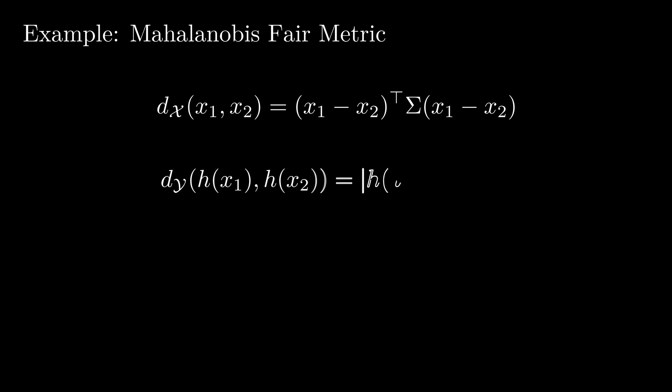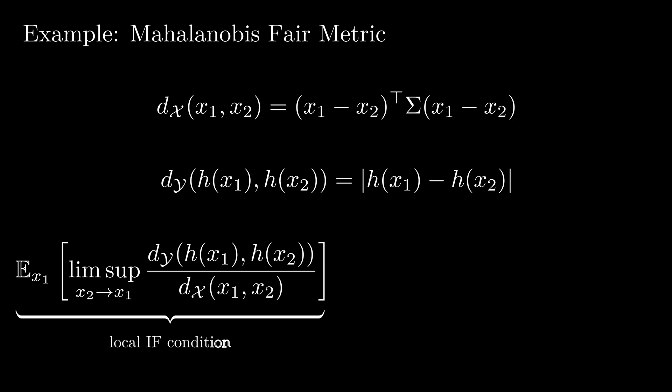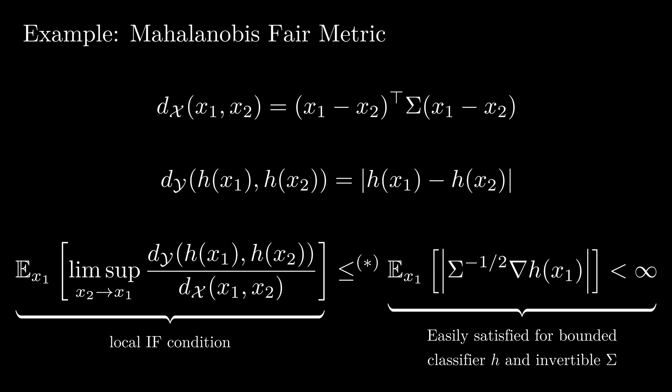So, now, I will give you an example of a fair metric which satisfies this Local IF property. This fair metric is a Mahalanobis fair metric, which is learned on the input space or any transformation of the input space under some fair constraint, so that if we know there are some directions of X which are heavily biased towards any protected group or non-informative for my task, then Sigma should give smaller weight to that direction, whereas it will give larger weight to all relevant directions. Our output is on a real line and the metric is the absolute value of the difference. Then, we can see that our Local IF condition, which is on the left side of the equation, is bounded by a simple version of it, which is next square root of Sigma inverse times gradient of H(X). If the right hand side is bounded, then obviously left hand side is bounded, and from our definition of Local IF, we can conclude that this metric, Mahalanobis metric, actually satisfies Local IF.